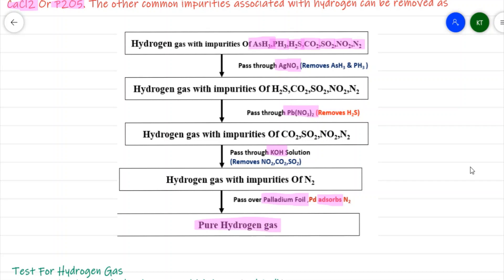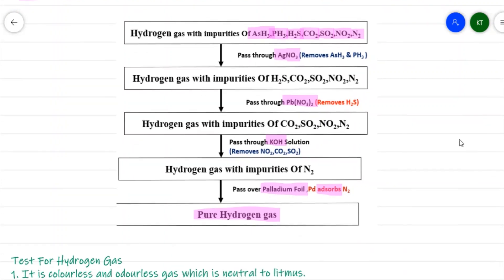In summary, the impure hydrogen gas is passed sequentially through silver nitrate, lead nitrate, potassium hydroxide solution, and over palladium foil to remove all impurities and obtain pure hydrogen gas.